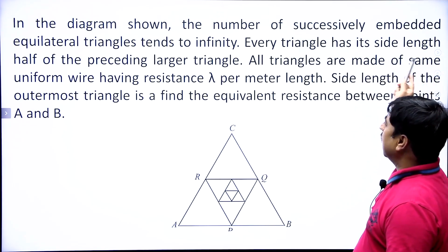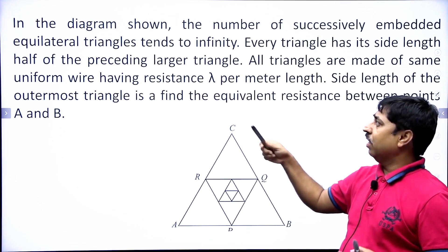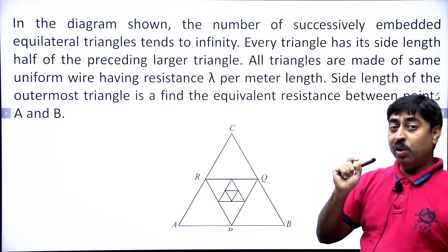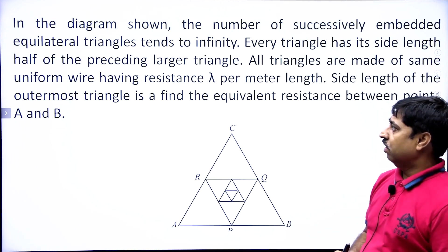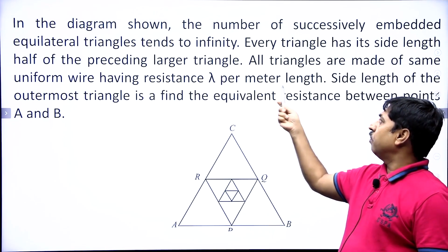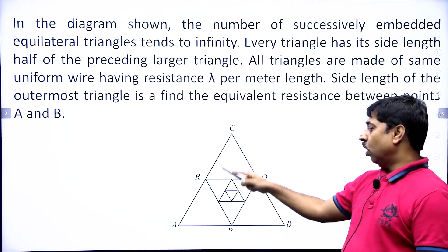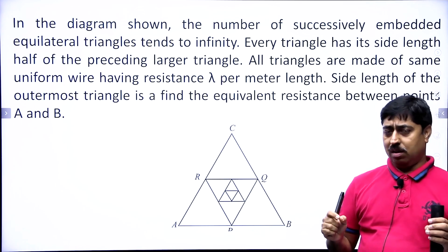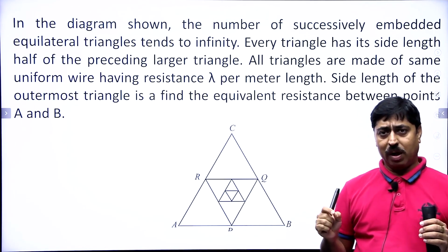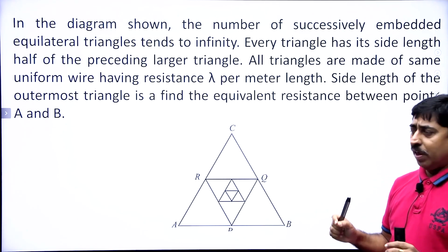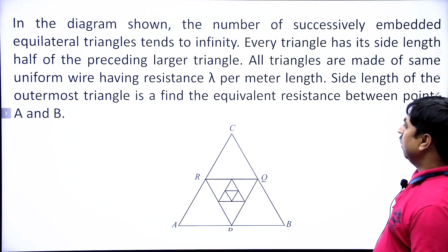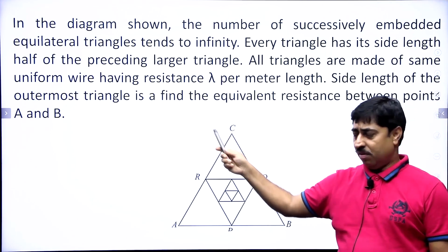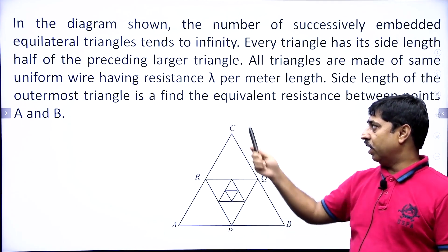Every triangle has its side length half that of the preceding larger triangle. All triangles are made of the same uniform wire having resistance lambda per meter length. Side length of the outermost triangle is A.